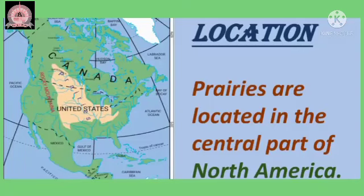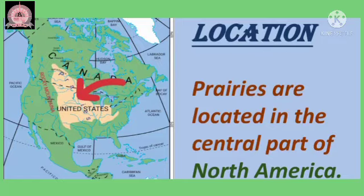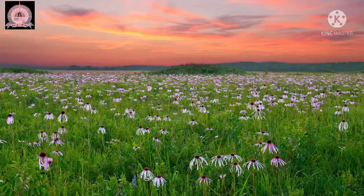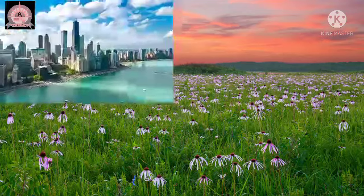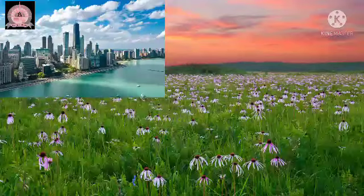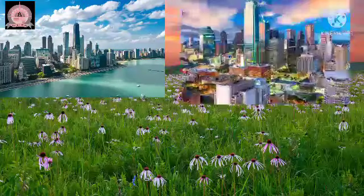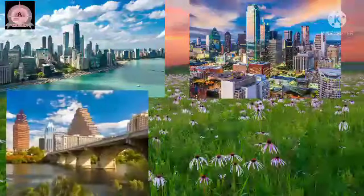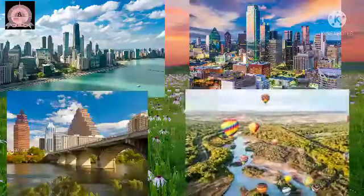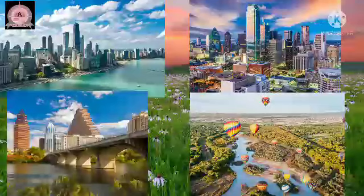Now, the location of prairies. Prairies are located in the central part of North America. The important cities in the prairies are Chicago, Dallas, Texas, New Mexico, etc.